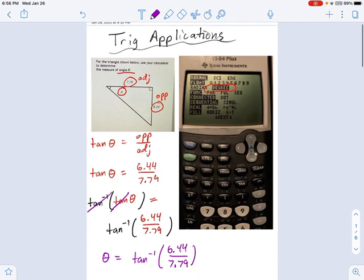Now you plug it into your calculator. I want you to look at the tangent button, this button over here, and see where it says above it in blue ink, inverse tangent. So you're going to need to hit the second button, and then hit tangent.